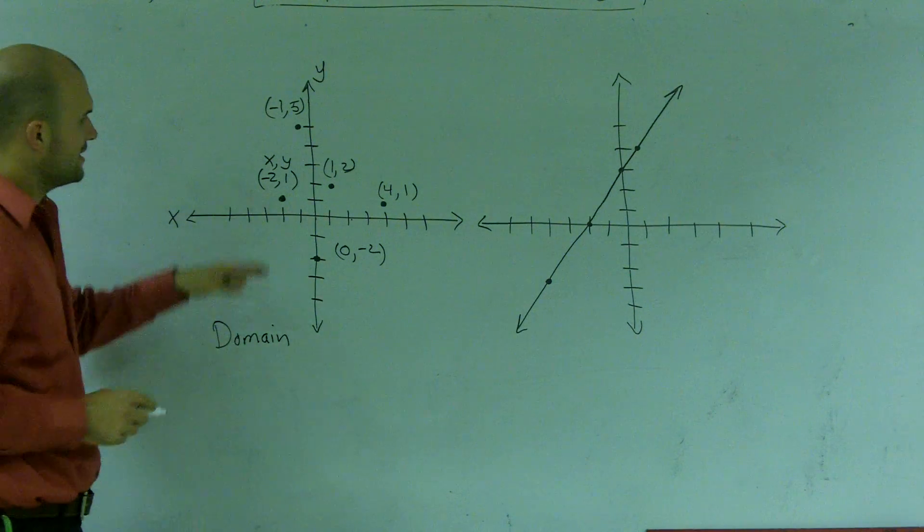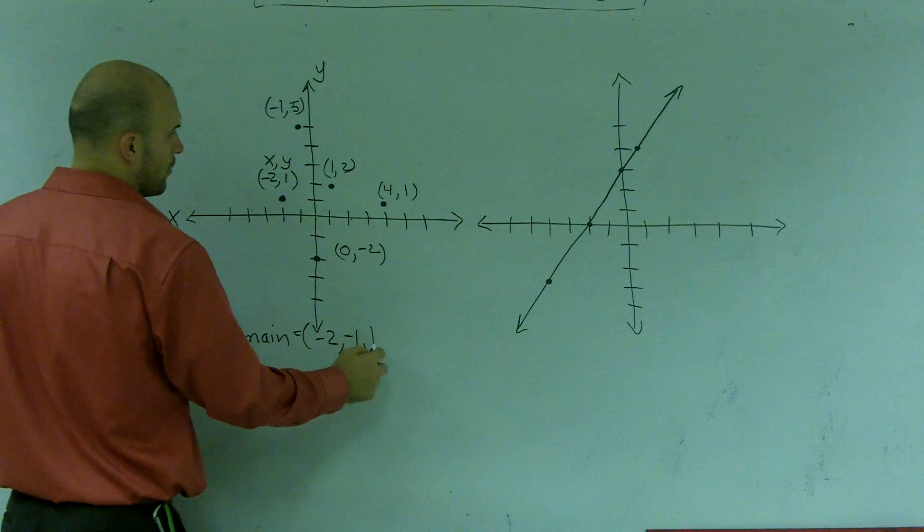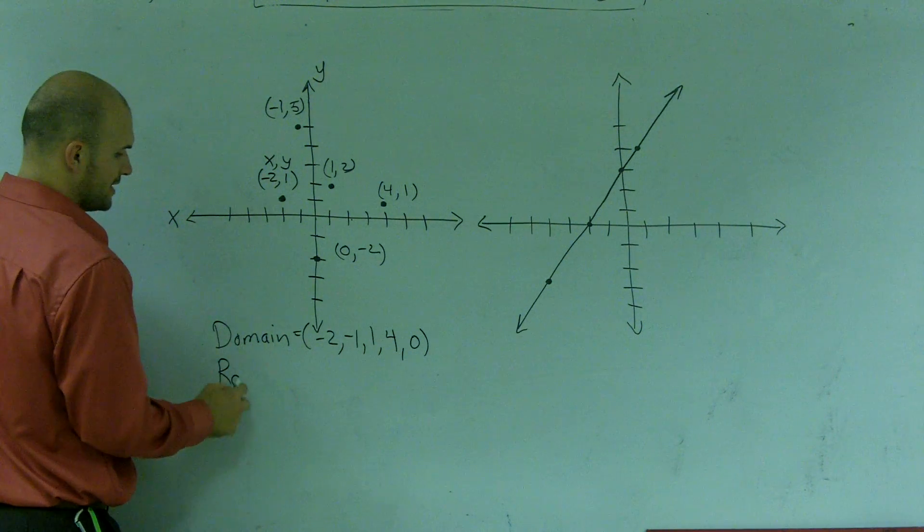So my domain here would be negative two, negative one, one, four, and zero.